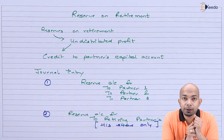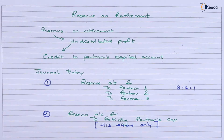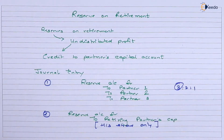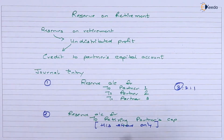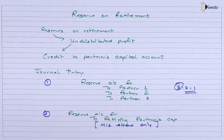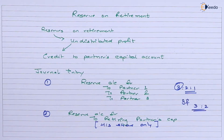For example, suppose the existing ratio was 3:2:1, and Partner 1 with a ratio of 3 retires. If the continuing partners decide not to change the ratio and keep it as 2:1, the journal entries remain the same. But if they decide to change the new profit sharing ratio to 3:2, then reserves will be distributed according to that new ratio after retirement.